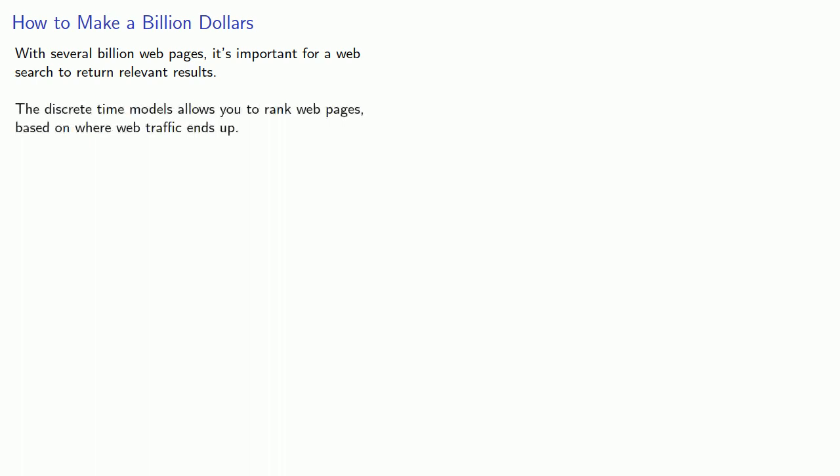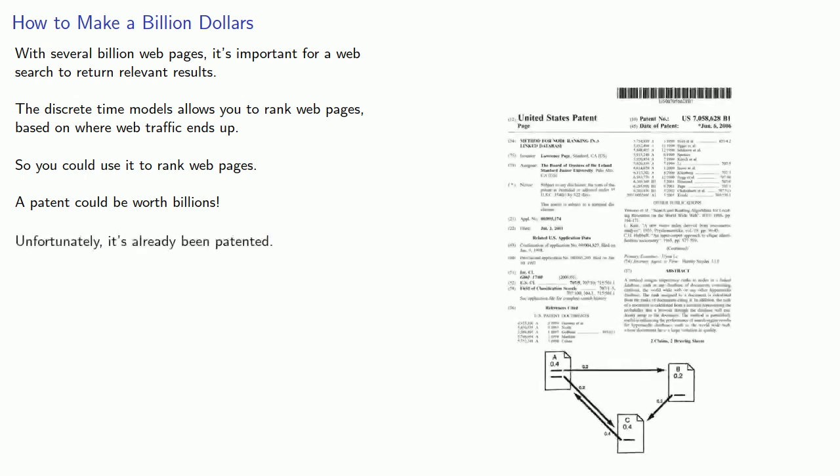And here's how to make a billion dollars. With several billion web pages and millions more created every day, it's important for a web search to return relevant results. The discrete-time model allows you to rank web pages based on where web traffic ends up, so you can use it to rank web pages. A patent on this process could be worth billions. Too late. It's already been patented.